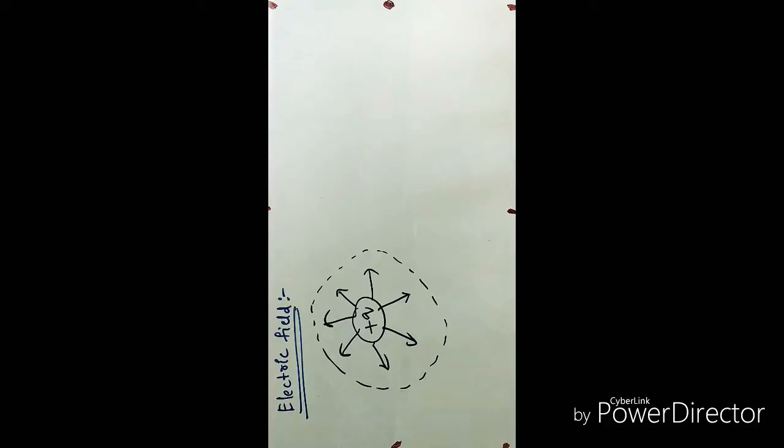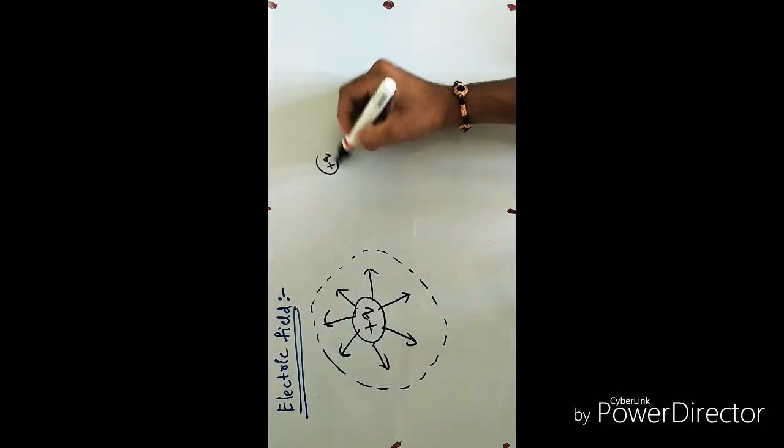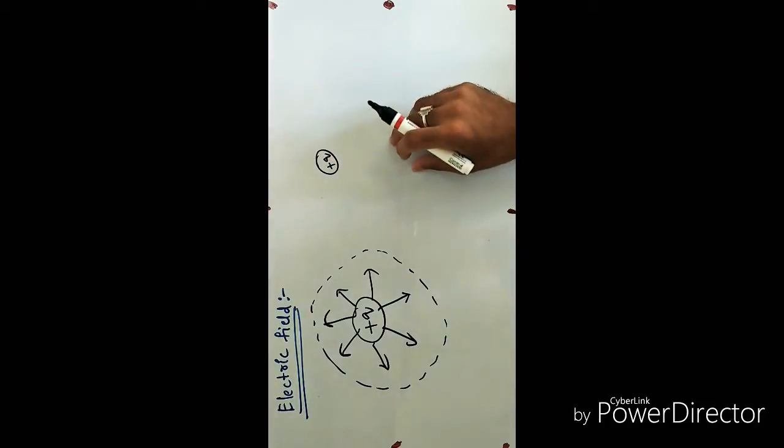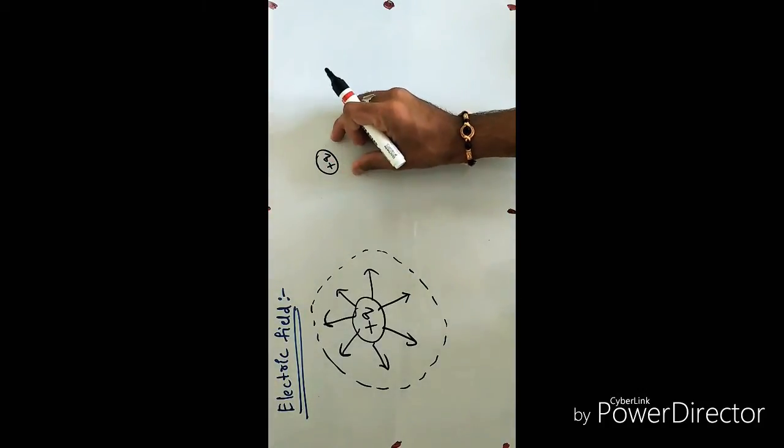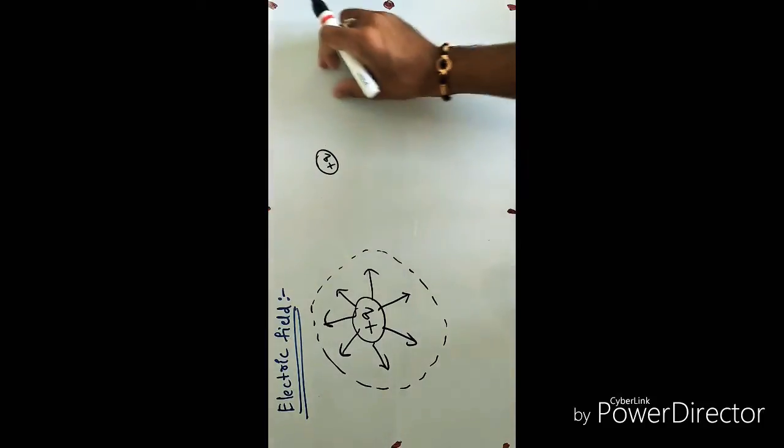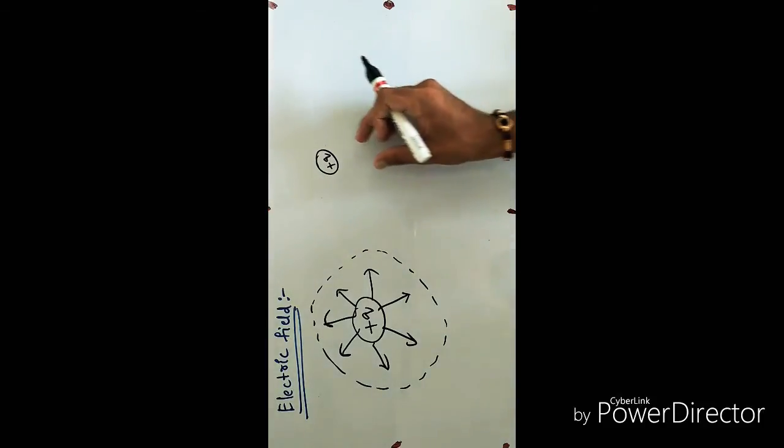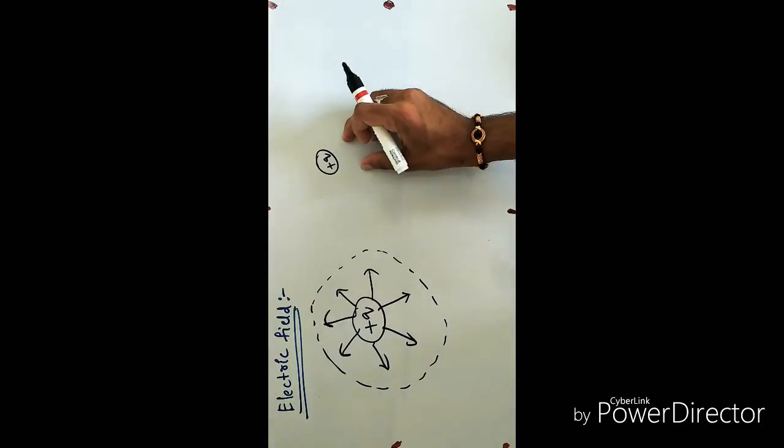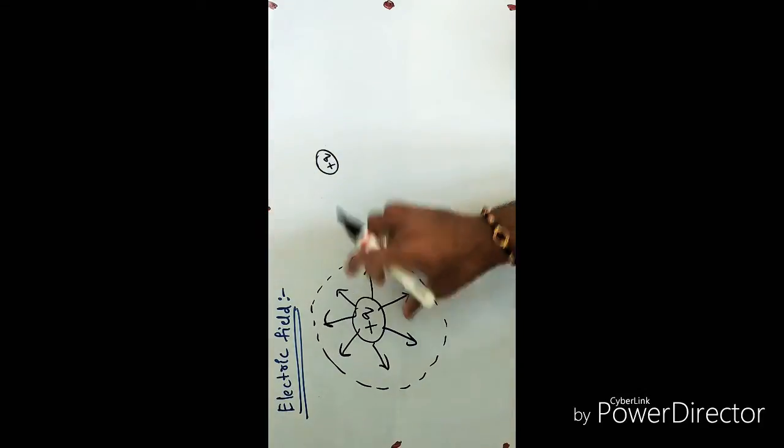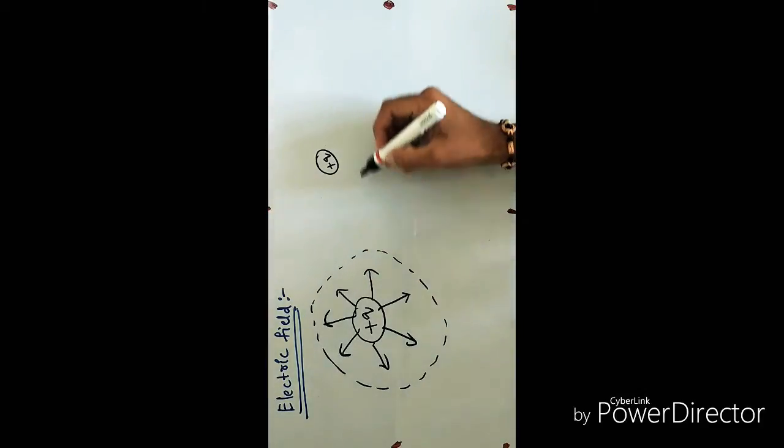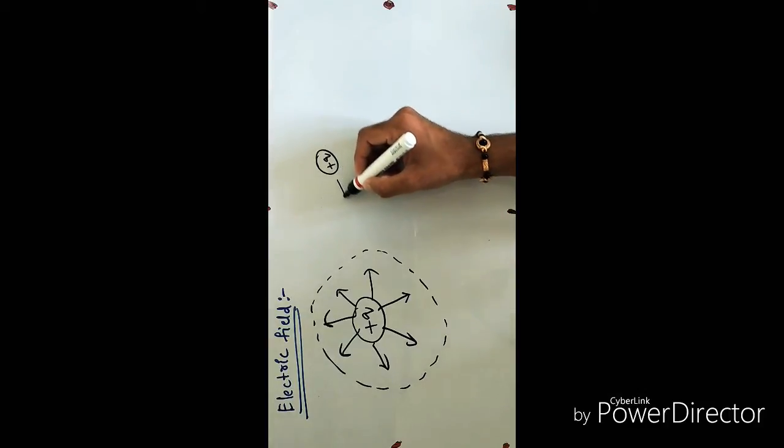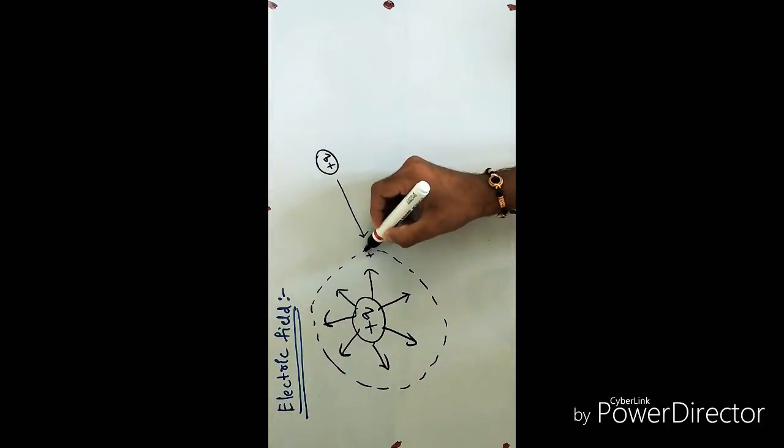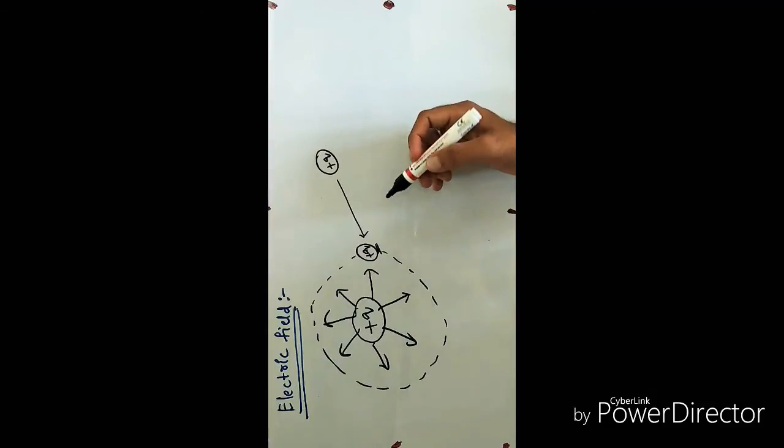Electric field, you can define in a precise manner. Suppose here I have another charge, a positive test charge is present. If I make this charge to move here or here, there will be no impact on this charge due to the charge that is present here. But if I start bringing this towards this, suppose at this boundary, if I see, then there will be some sort of force acting. In the Coulomb's law, we already discussed about it.